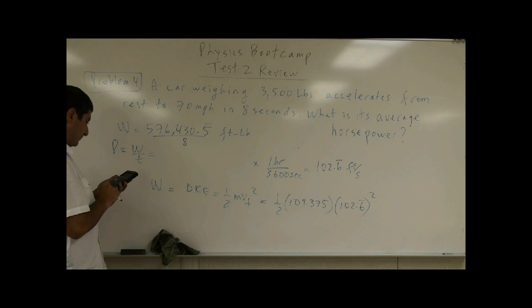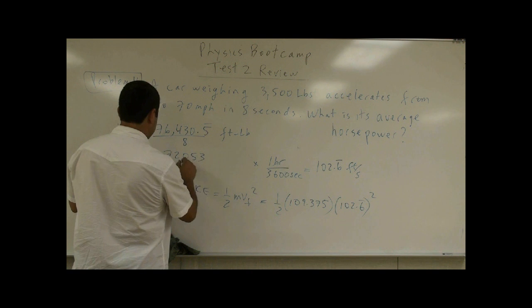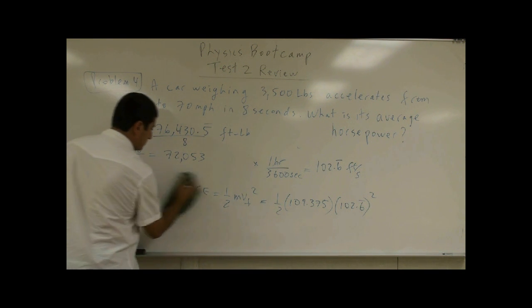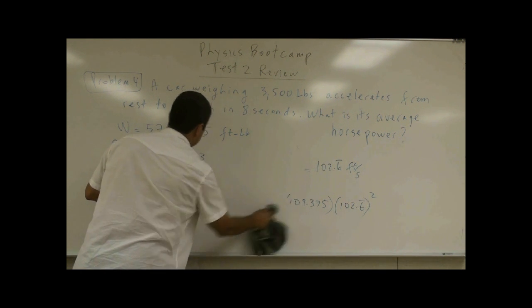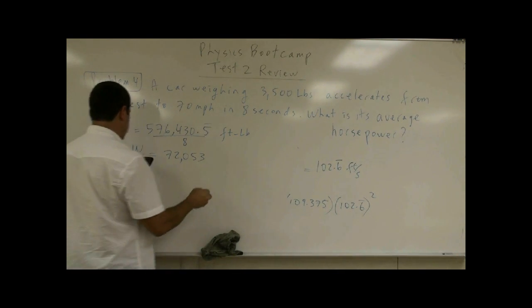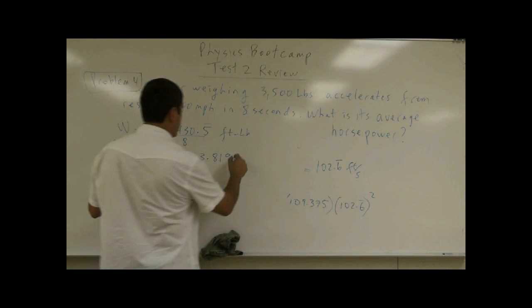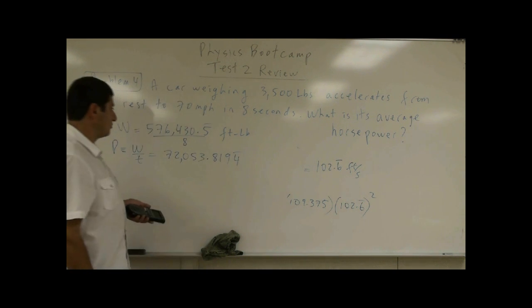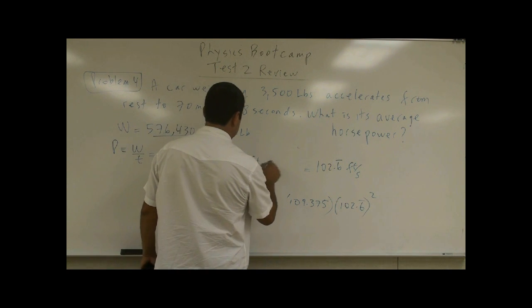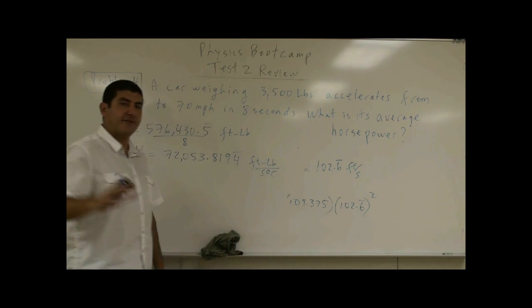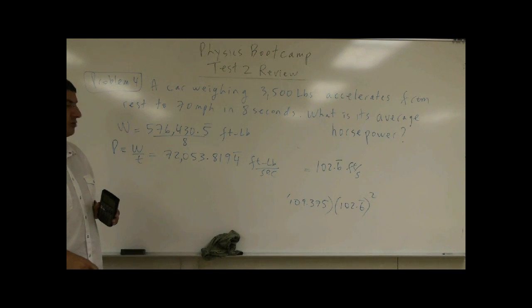72,053.819 and repeating fours. What is the unit of that? Foot pound per second. So the average power of the car during that time interval is 72,053 foot pound per second.